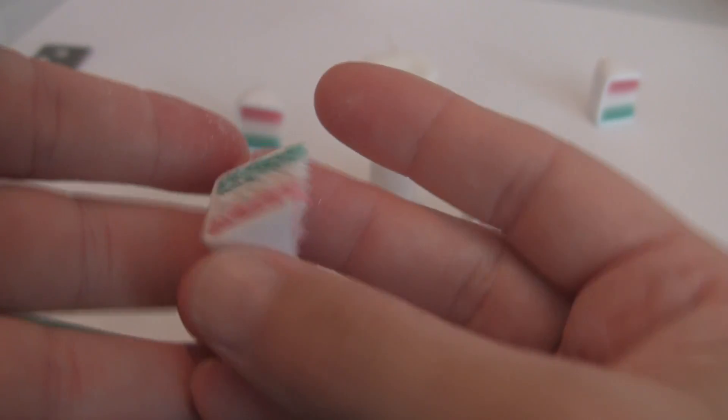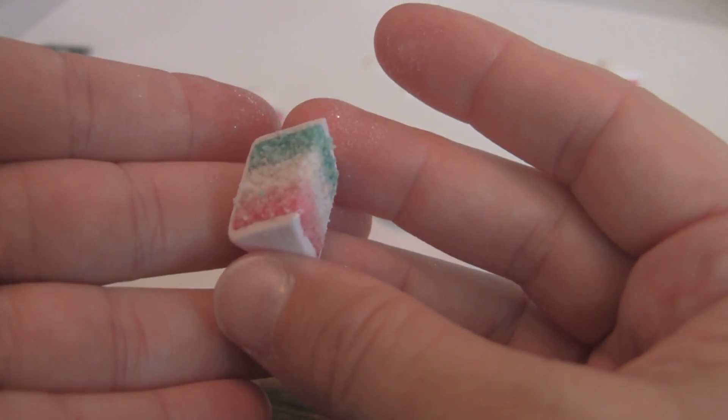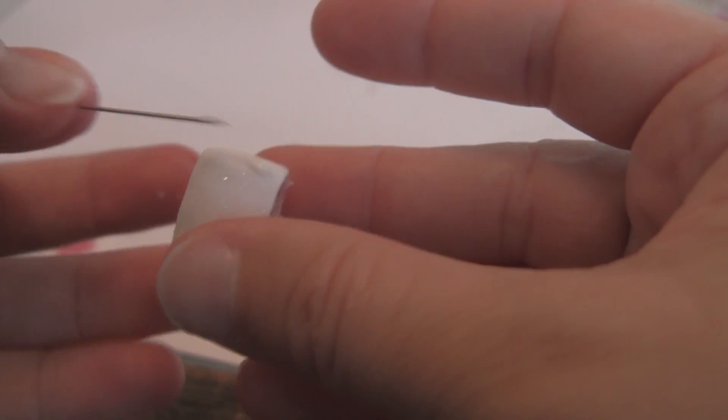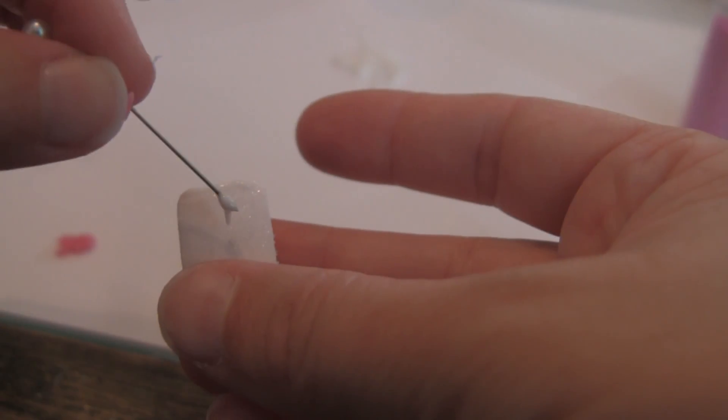From here, you bake the cake. I take some of the translucent liquid Sculpey and I paint around the back edge. And then I make some drips.